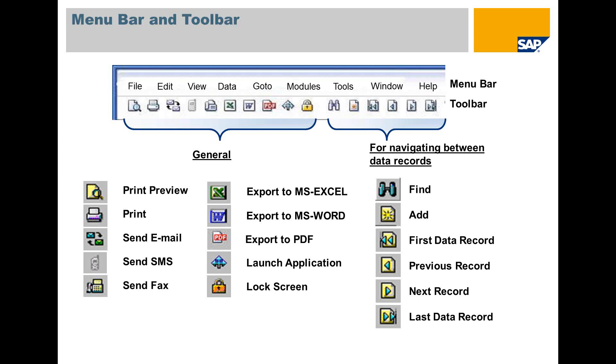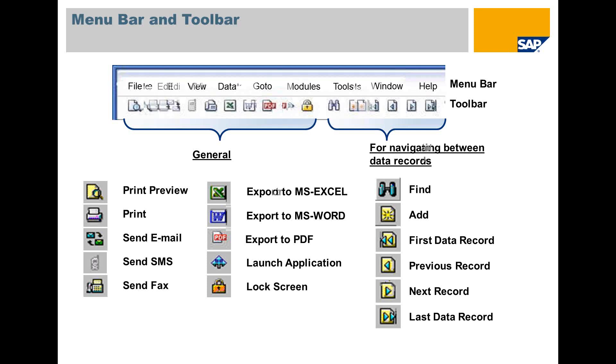The menu bar contains the Windows Standard menu: File, Edit, Window, and Help, as well as generic SAP Business One functions.